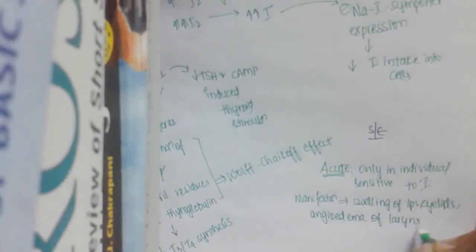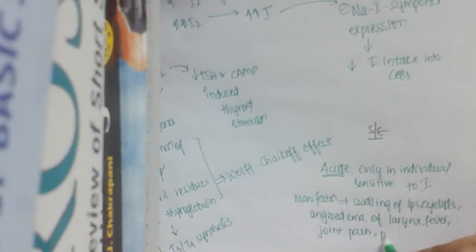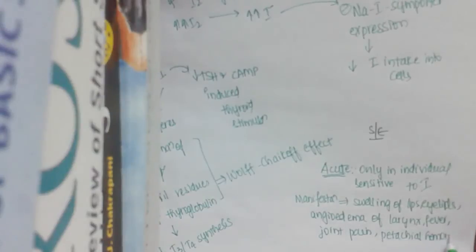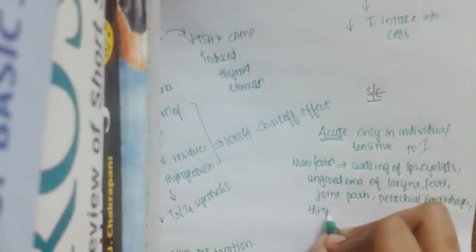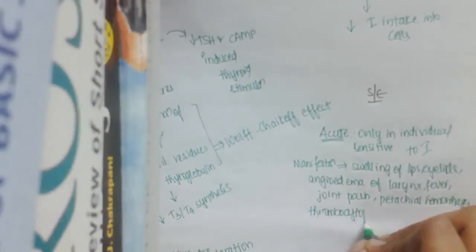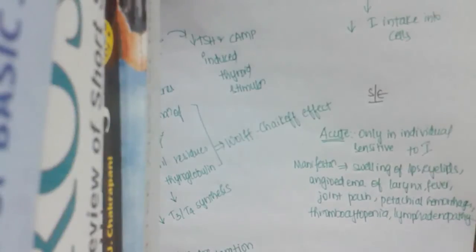There may be fever, joint pain, petechial hemorrhages, thrombocytopenia, or lymphadenopathy. The only treatment for this is to stop exposure to iodine.